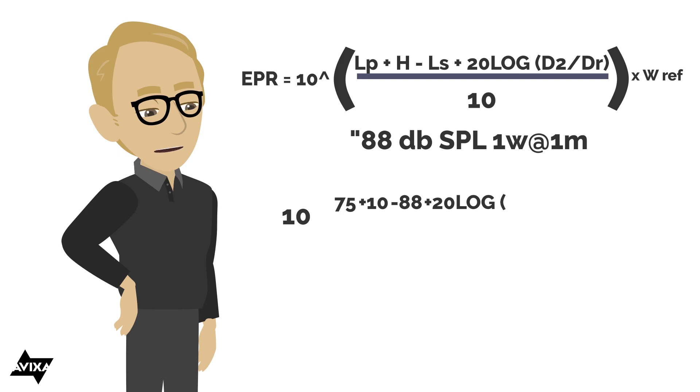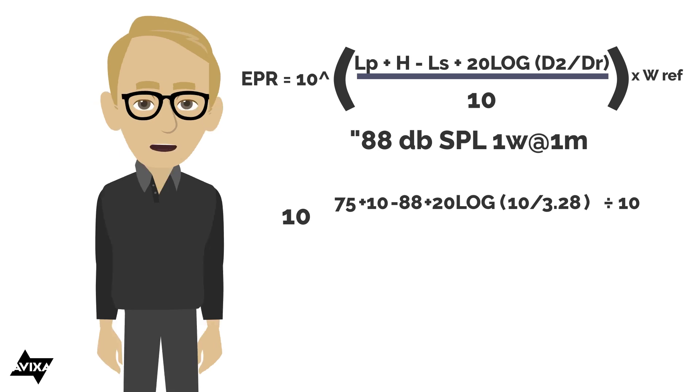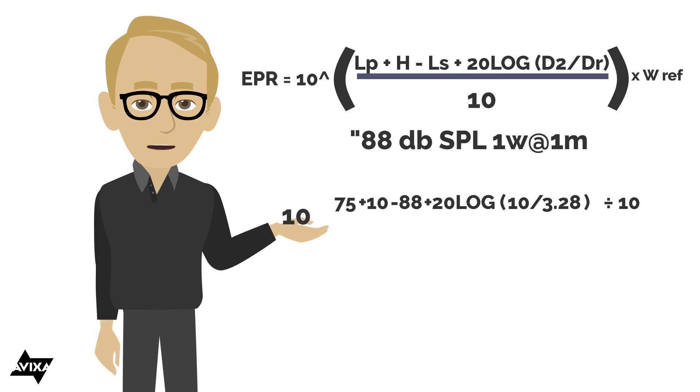Plus 20 times the log of d2 over dr. Let's say our distance from loudspeaker to listener is 10 feet. Now I said feet, that's US customary, so I need to convert this one meter to 3.28 feet. That's going to be our reference distance, our dr. So 10 as compared to 3.28, and then we're going to divide that at the bottom of the formula here by 10.